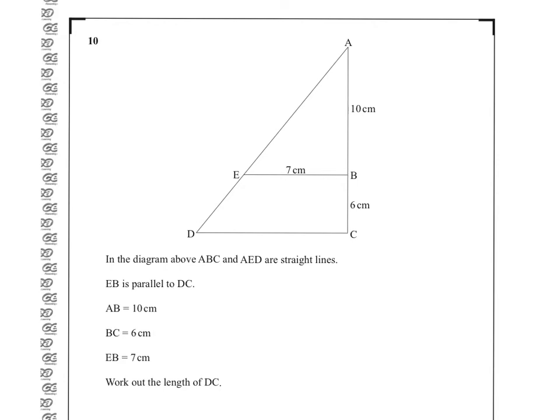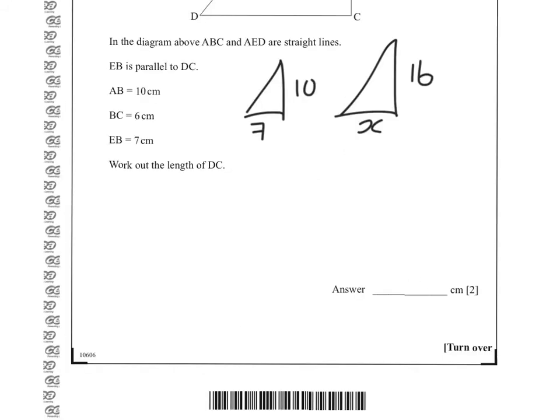This is a similar triangles question. We have the smaller triangle, and then we have the larger triangle. They have the same angles. A is common, C is common, and because of the parallel lines, D and E are corresponding, so they are the same size. So the small triangle is 7 and 10, and the large one, we're trying to find the bottom, but the side is 16. Ratios between the sides must be the same, which means that X divided by 7 must equal 16 divided by 10. So X divided by 7 must be 1.6, and X must be 7 times 1.6.